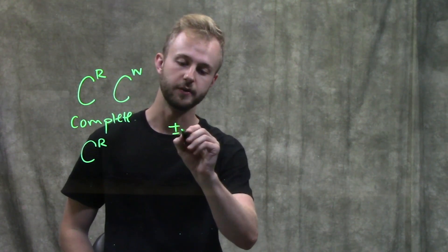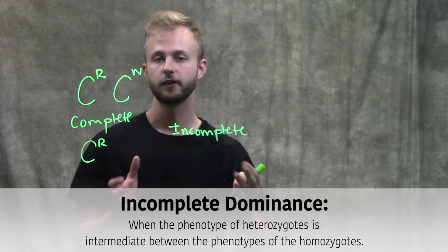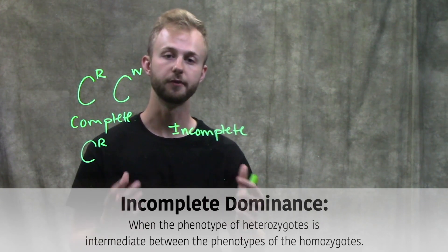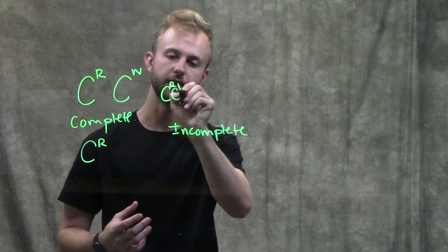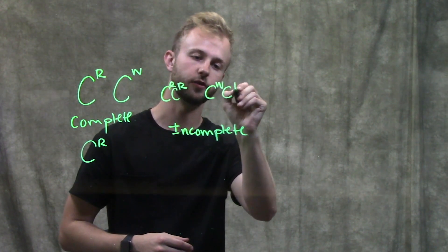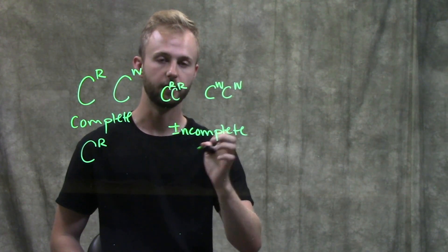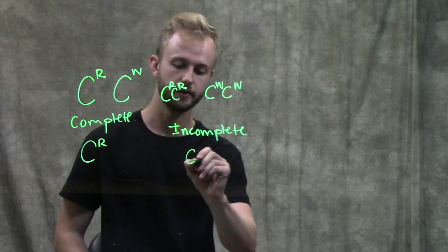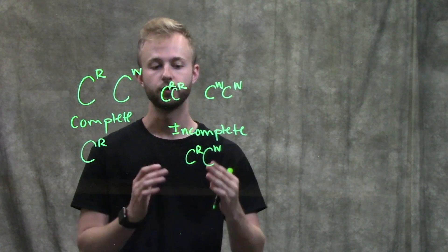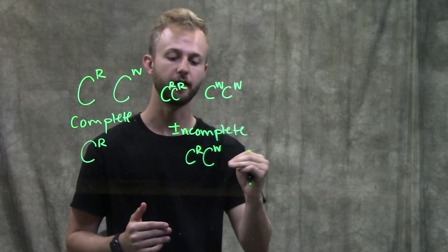Now moving on to incomplete dominance. In incomplete dominance, the phenotype of the offspring is going to be somewhere in between the two phenotypes of the parents. So let's say we have one parent that is homozygous for red colored flowers and another parent that is homozygous for white colored flowers. Their offspring are going to have the genotype CR and CW.